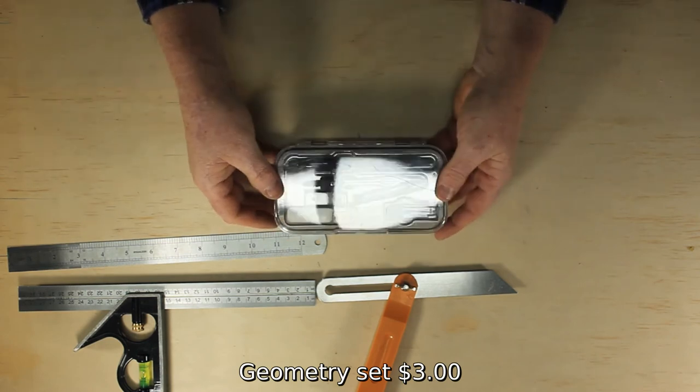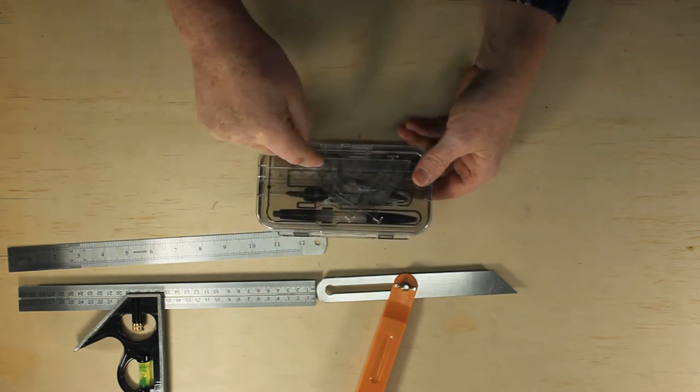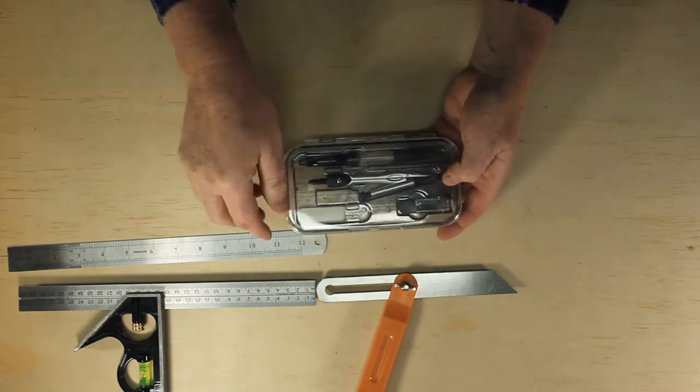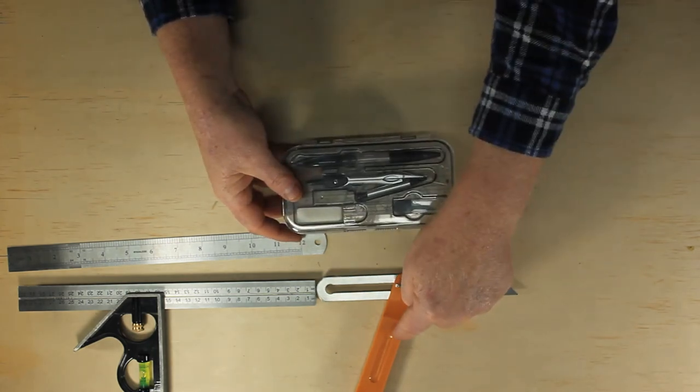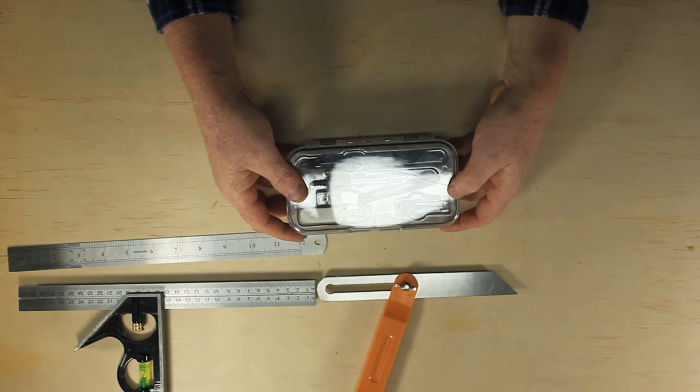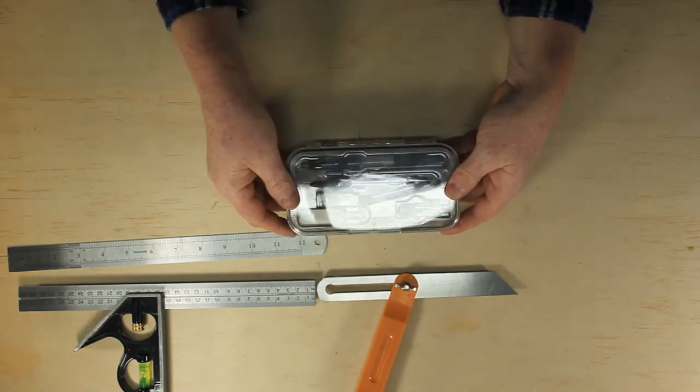We're buying a cheap school geometry set to get a protractor and a compass. We'll use the protractor if we want to set our sliding bevel to an exact angle and we'll use the compass for drawing and dividing circles.